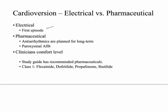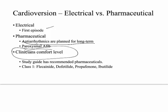For the second question — electrical or pharmaceutical — electrical is always recommended for the first episode because it has a higher success rate and fewer relapses. You recommend pharmaceutical cardioversion when you're already planning to give antiarrhythmics long-term, or if it's paroxysmal AFib, which will often go away on its own, making invasive treatment unnecessary. Personal comfort level of the treating clinician is also a consideration.